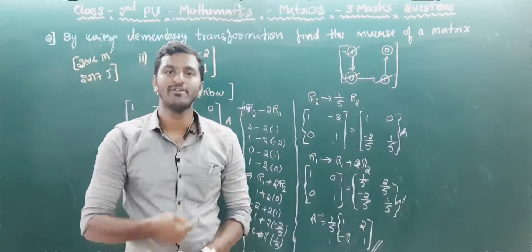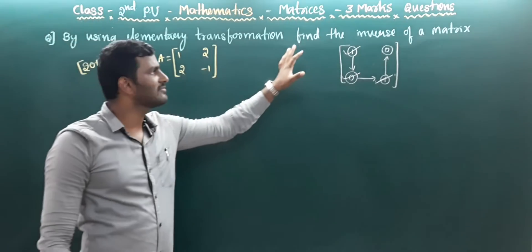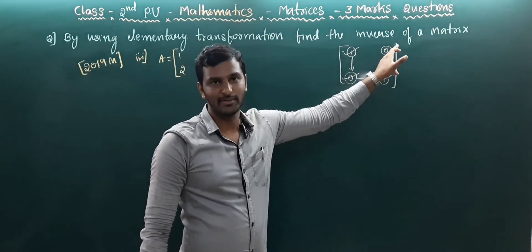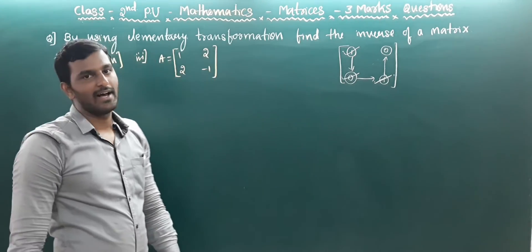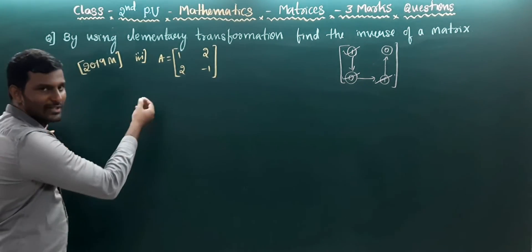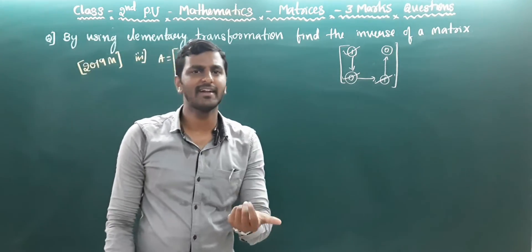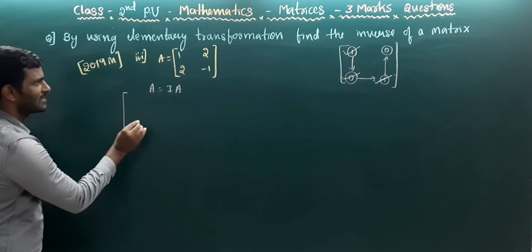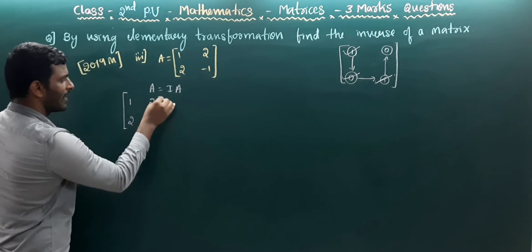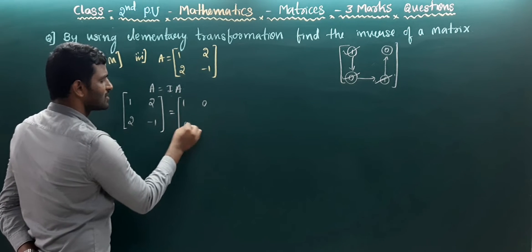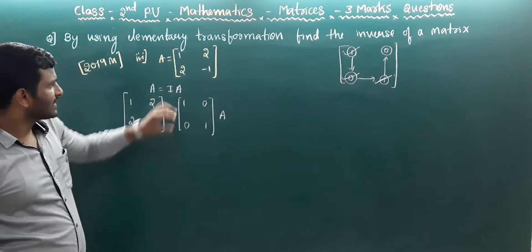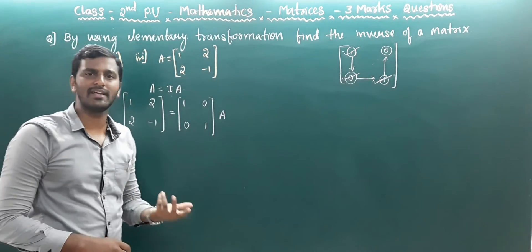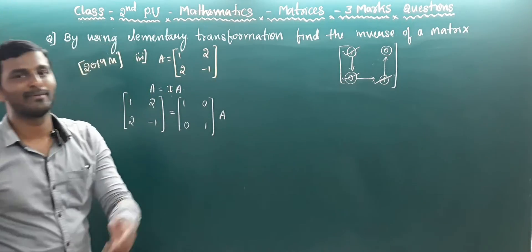Follow the video and note it down. We move on to the next question — also the same type: by using elementary transformation, find the inverse of the matrix [1, 2; 2, -1]. The pattern is the same: first make 1, 1, 0, 1, 0. This question was asked in 2019 March, and it is an important question that may appear again in supplementary or annual examinations.